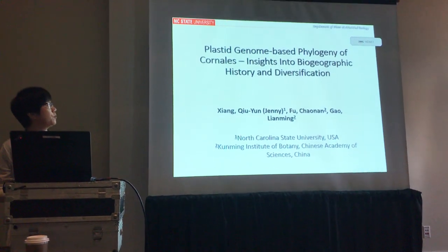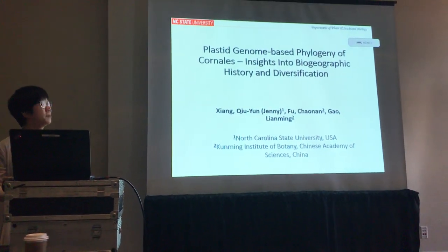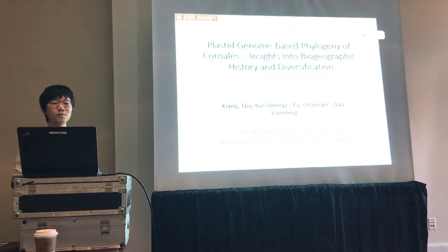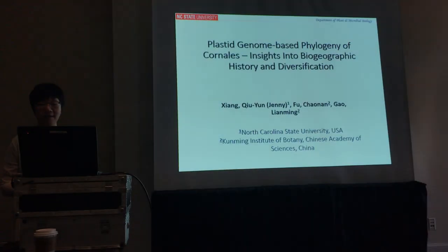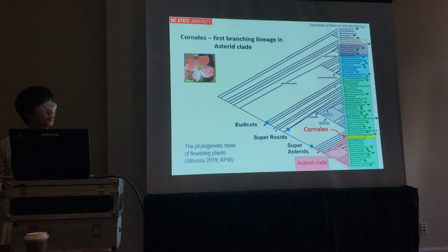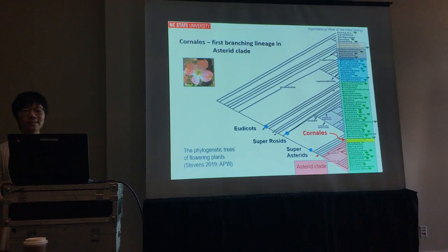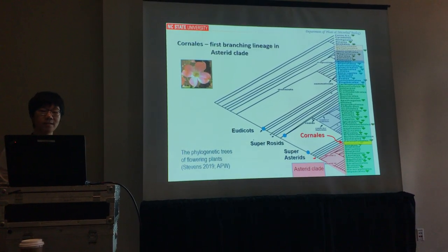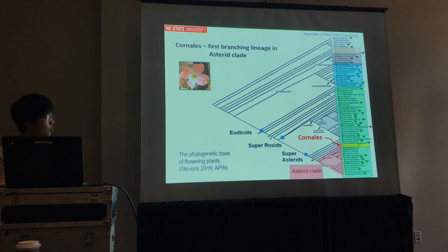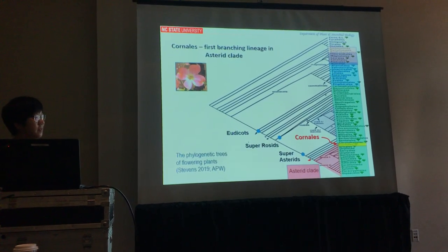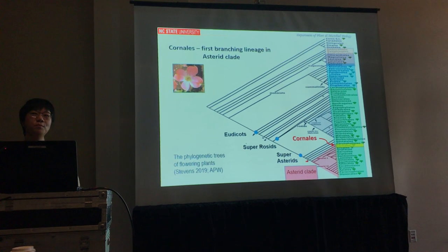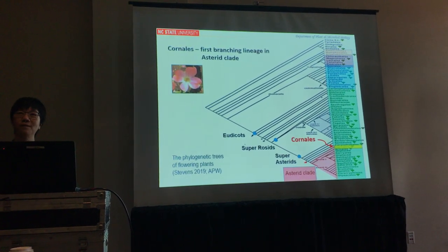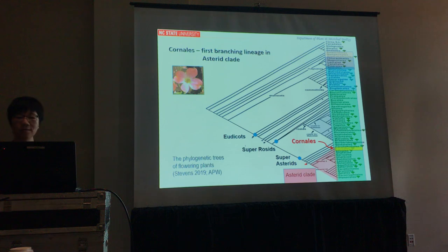A collaborative work on the plastid genome phylogeny of Cornales, with insights into biogeography and diversification. As you all know, Cornales represents the earliest branch of the living asterid clade in the angiosperm tree of life, so understanding the history of this group would be helpful for a better understanding of the evolution of the asterid clade.